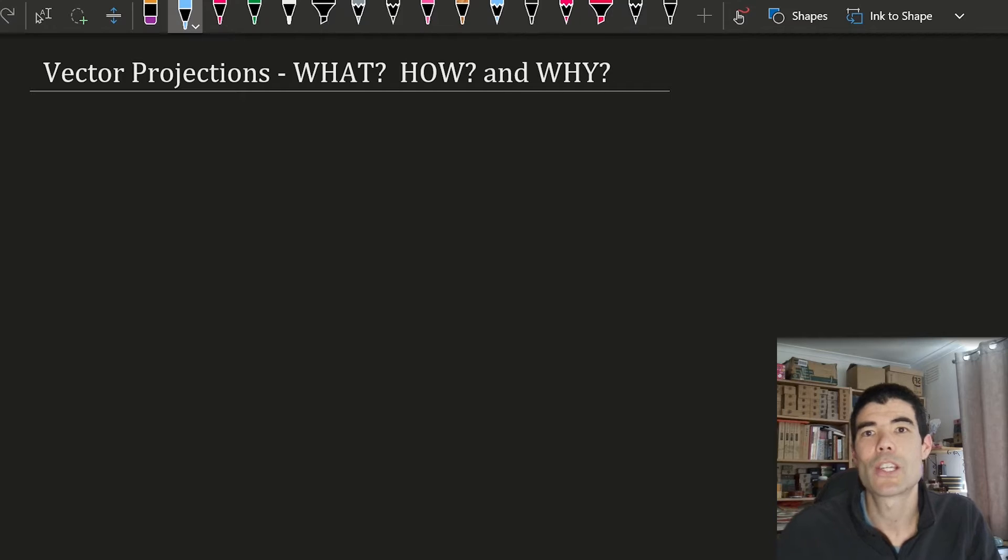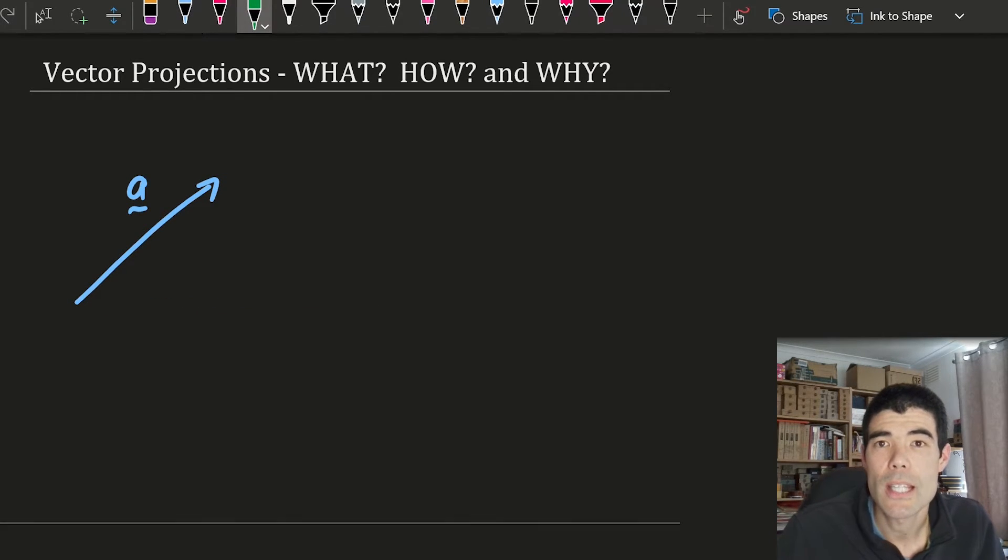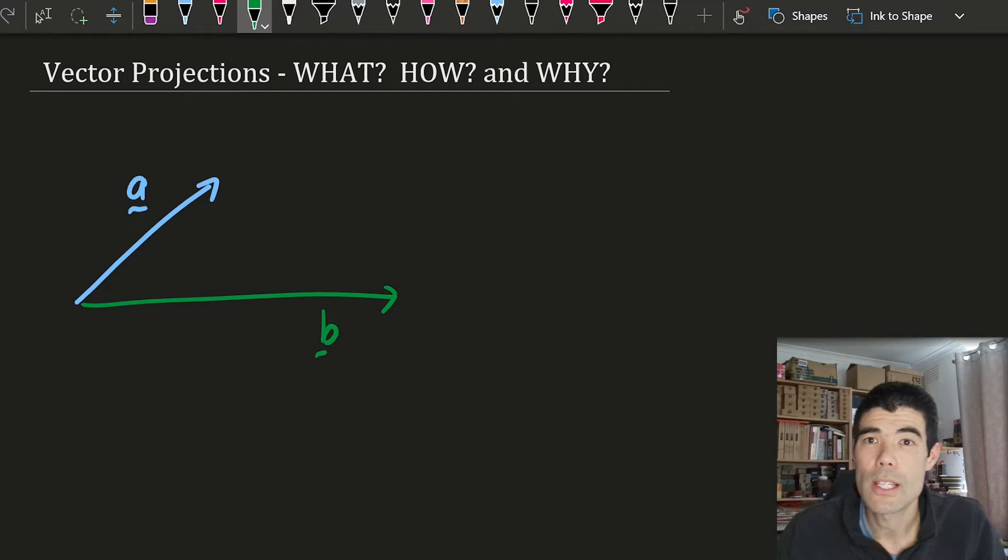So what is a vector projection? We take two vectors, a and b. If we want to project a onto b, what we do is construct a line at a right angle to b, and then find this vector here in the direction of b.